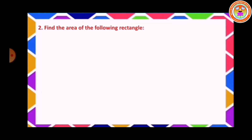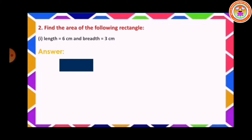Second question: find the area of the following rectangle. Here length is 6 centimeter and breadth is 3 centimeter. Draw one rectangle — opposite sides are equal, so length is 6 centimeter, breadth is 3 centimeter. Area of a rectangle is equal to length into breadth, that is 6 centimeter into 3 centimeter, which is equal to 18 centimeter square.